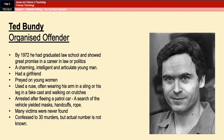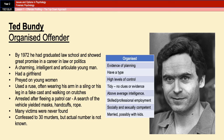If you compare Ted Bundy to the checklist of organised characteristics, you can say that he planned his crimes, left no or very little evidence, definitely had a type, was skilled and socially and sexually competent, and exerted high levels of control over his actions.